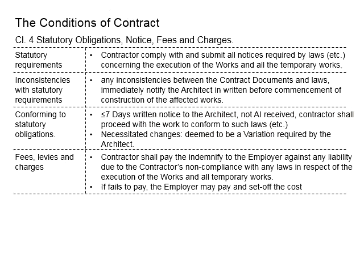When the architect does not provide further instruction, the contractor shall proceed with the work conforming to the law. During the course of actions in conforming to the law, whichever changes are made as necessary will be deemed to be variations required by the architect. As a result, the contractor is eligible to claim for the cost of the work done.